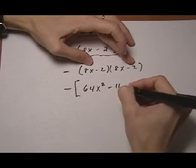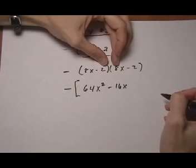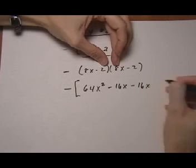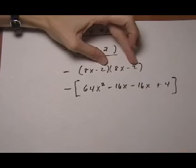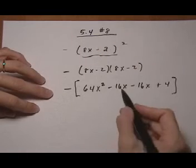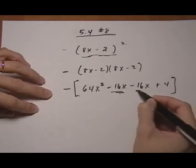8x times minus 2: minus 16x. Minus 2 times 8x: minus 16x. Minus 2 times minus 2 is plus 4.